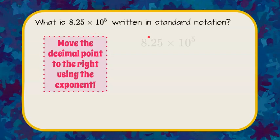So here we go. Let's write down our number. We have 8.25 times 10 to the 5th, and we're going to take the scientific notation and write it in standard notation.